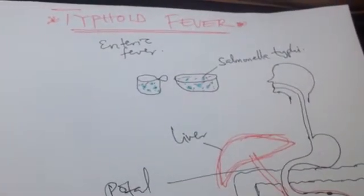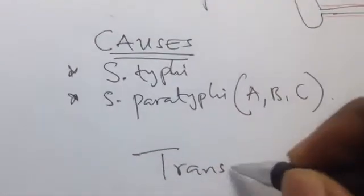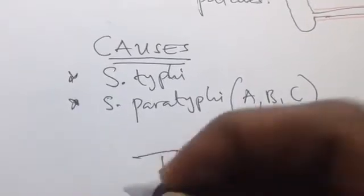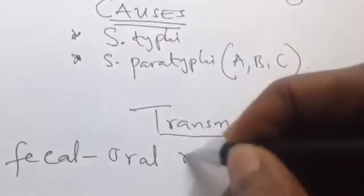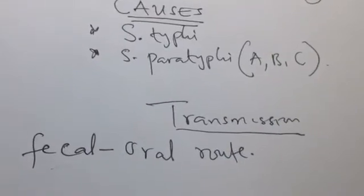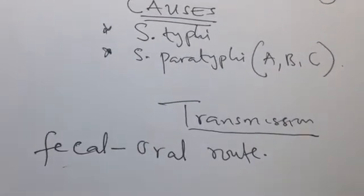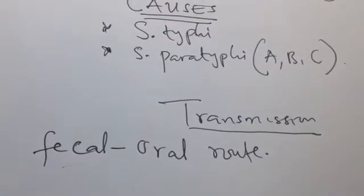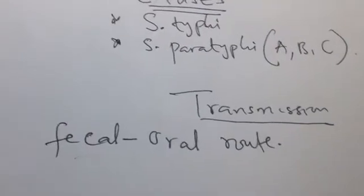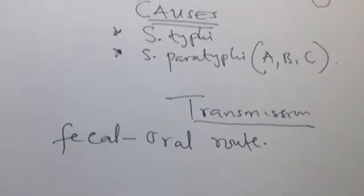How is this bacteria transmitted? It is transmitted by the fecal-oral route. 'Fecal' means stool and 'oral' means the mouth. The bacteria is transmitted through contaminated food or contaminated water. When we ingest that contaminated food or drink, this bacteria infects our body — that is the fecal-oral route.